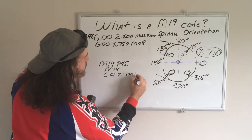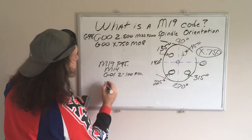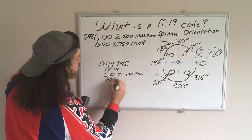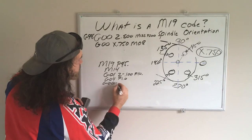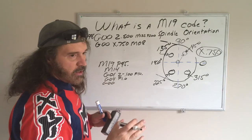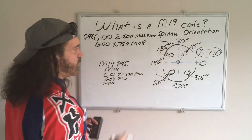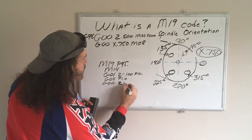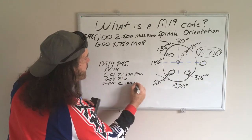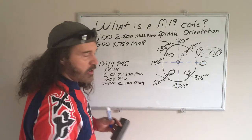Then M14, G01 Z-0.100, and that's a feed rate of 10. We'll have it dwell, G04 P1. Then we're saying this is the end of our spotting. We'll rapid Z1.0 and have the coolant turn off.